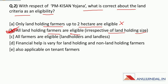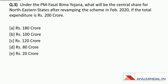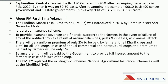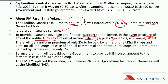Question three: Under PM Fasal Bima Yojana, what will be the central share for northeastern states after revamping the scheme in February 2020 if the total expenditure is rupees 200 crore? Pradhan Mantri Fasal Bima Yojana was launched in 2016 by Prime Minister Narendra Modi. It is a crop insurance scheme providing insurance coverage and financial support to farmers in the event of failure of any notified crop due to natural calamities, pest and disease, or wild animal attack.